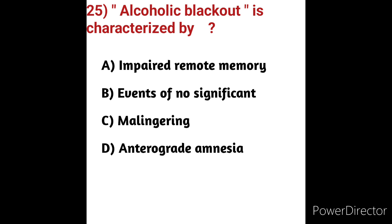Options: (A) impaired remote memory, (B) events of no significance, (C) malingering — also called feigning illness or gold-bricking, such as avoiding work and responsibilities — (D) anterograde amnesia. Anterograde amnesia is a condition where the ability to form new memories is impaired. Alcoholic blackout is characterized by anterograde amnesia — impaired capacity for new learning. The correct answer is option D.